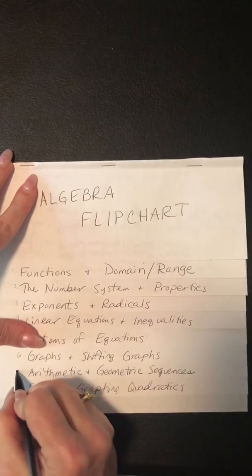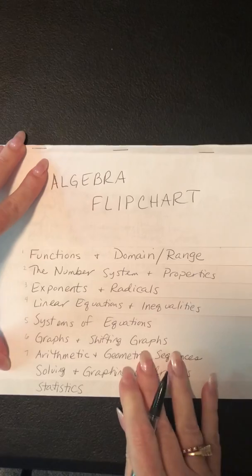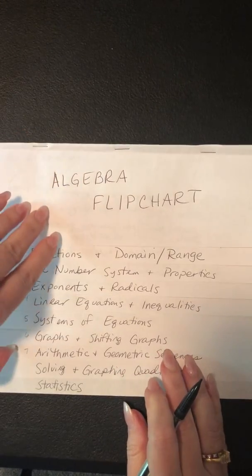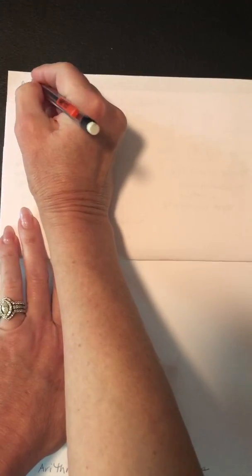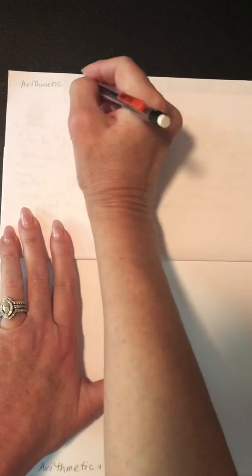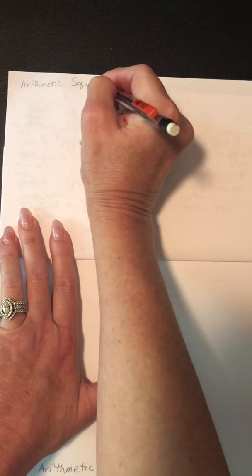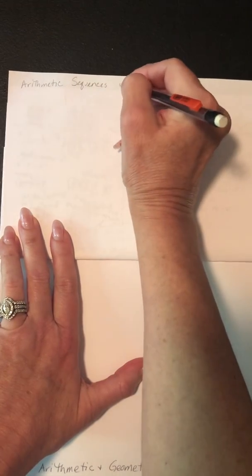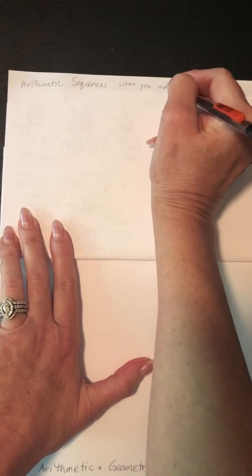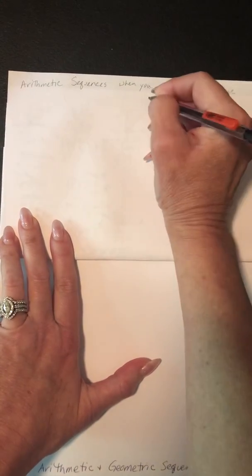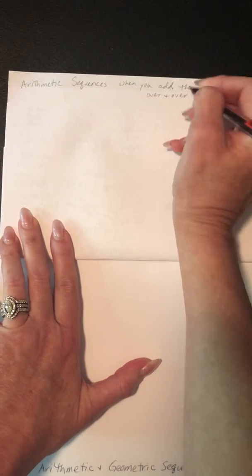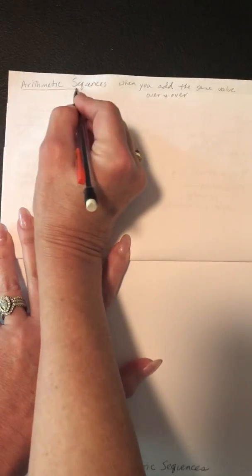Now we're going to talk about tab 7, which covers arithmetic and geometric sequences. We'll start with arithmetic sequences first. Arithmetic sequences are when you're adding the same value over and over. If you multiply the same value over and over, then it's a geometric sequence, but we're going to start with arithmetic sequences.